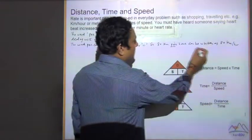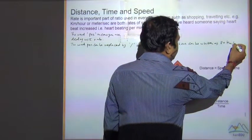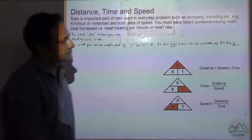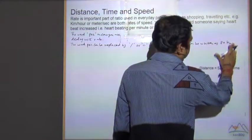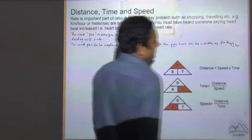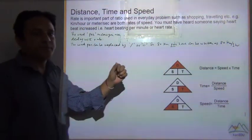So per hour means it is divided by one hour. Hr is the short form of hour.